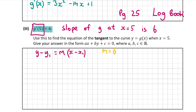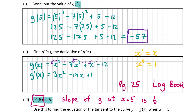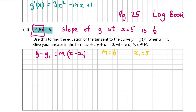We're finding the tangent when x equals 5, so x1 is 5 and we need the corresponding y value. We've already done that in part A1 — putting 5 into the original equation g of x (not the differentiated version) gave minus 57. So y1 is minus 57 and the coordinate is (5, minus 57). That's the point where the tangent hits the curve.